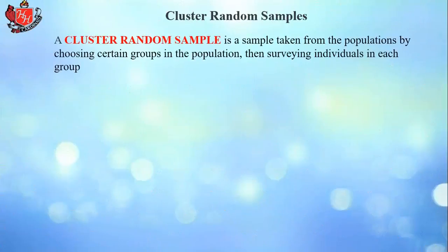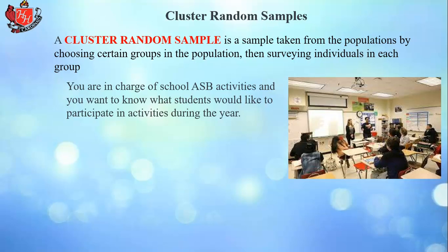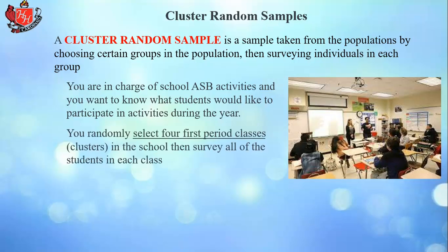A cluster random sample is taken from the population by choosing certain groups, then surveying individuals in each group. For ASB activities, you might randomly select four first period classes — those would be the clusters — and survey all students in them. For example, you pick a class that's mostly ninth graders, another mostly tenth, another mostly eleventh, and another mostly twelfth.